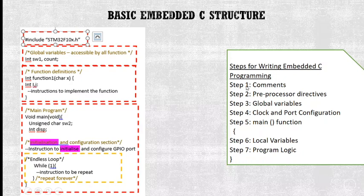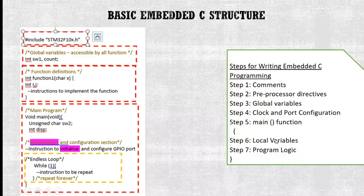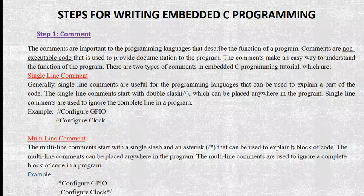The steps for writing embedded C programming — we have seven steps. Step one is comments. Step two is preprocessor directives. Then global variables, clock and port configurations, main function, local variable declarations, and finally the programming logic or main program. Let's go through each one.